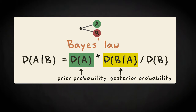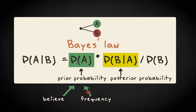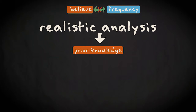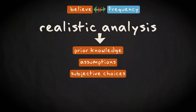In this wider context, there are no simple frequency counts to inform you about the belief in A, so it needs to be assessed qualitatively. Considering probability as a belief rather than a frequency-based quantity is quite a different viewpoint and has led to a lot of philosophical debates among the different proponents. But in practical situations the different perspectives appear not to be too far apart. In any realistic analysis there is prior knowledge involved as well as assumptions and subjective choices, while wherever possible one would use observations to estimate probabilities.